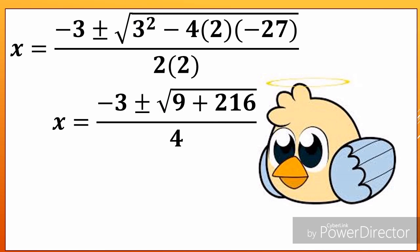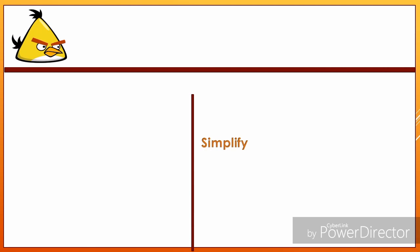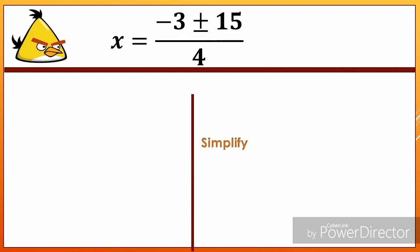Now we simplify: negative 3, plus or minus — 3 squared equals 9, and negative 4 times 2 times negative 27 gives positive 216 — all over 4. So we have x equals negative 3, plus or minus the square root of 9 plus 216, which is 225, all over 4. Then x equals negative 3, plus or minus 15, all over 4.